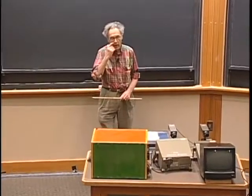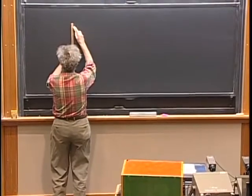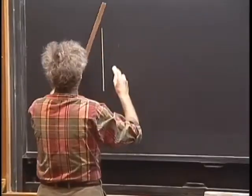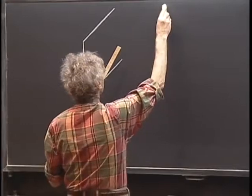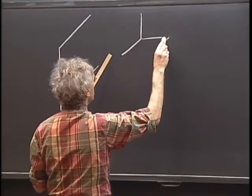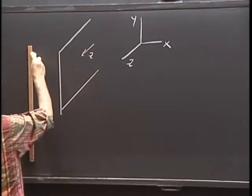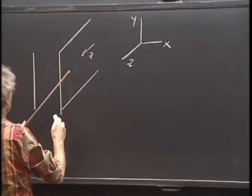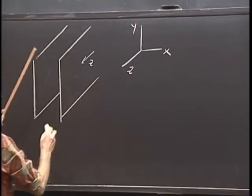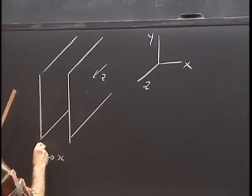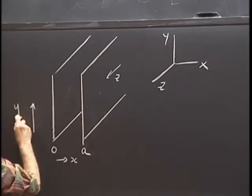I will return to something I have discussed before but never fully explained. That's the setup whereby we have a metal plate. This is my coordinate system: x, y, z — so this is the z direction. And then I have here another plate — two parallel plates. I call this x equals zero and this x equals A. This is the y direction.